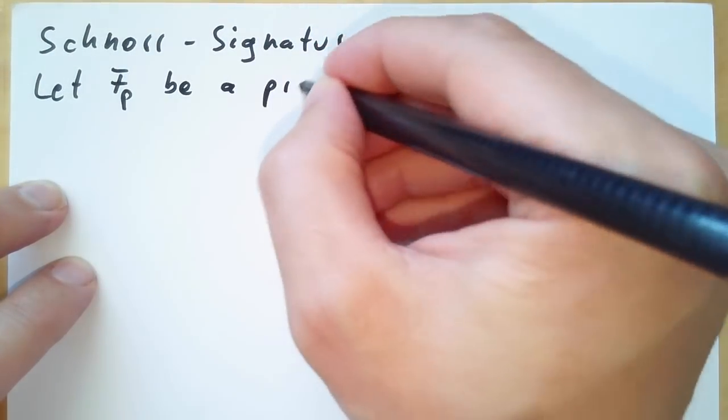So let fp be a prime field of order p. Whoa, whoa, whoa, don't get lost if you don't know what a prime field of order p is. I mentioned this for the tech guys and mathematicians in here because it's the correct term. If you're not one of those, you can think of this very easily. Just think of regular numbers, regular positive integers.